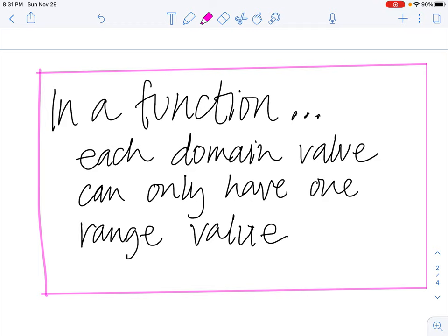Here's the rule I want you to write down: In a function, each domain value can only have one range value. Each domain value can only have one range value. That's a really important word there, the word one. You can only have one range value for each domain value. If you put something in for x, you can only get out one possible y value.